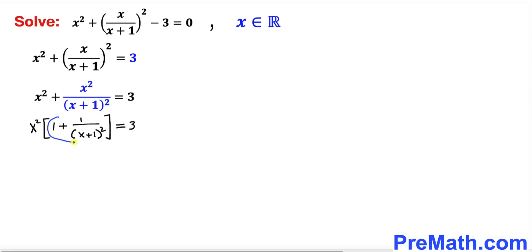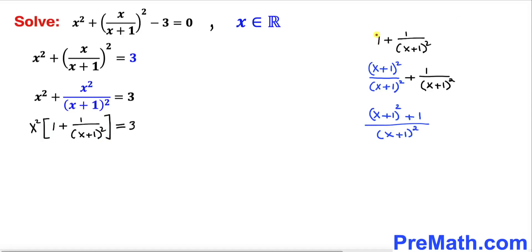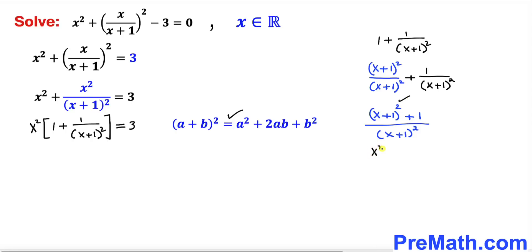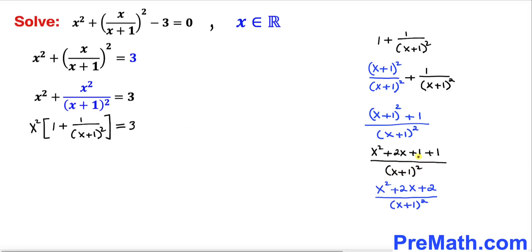Now let's focus on the expression inside the bracket. We rewrite 1 as (x+1)²/(x+1)² to get a common denominator. Applying the well-known identity (a+b)², the numerator becomes x² + 2x + 1, plus 1, divided by (x+1)². Combining the constants, 1 + 1 becomes 2, so the numerator is x² + 2x + 2.